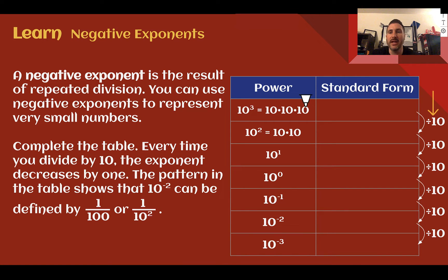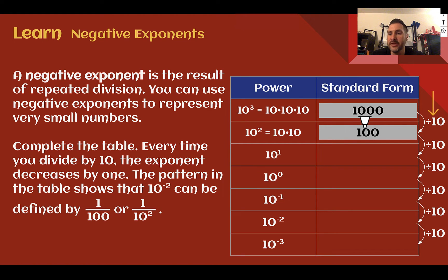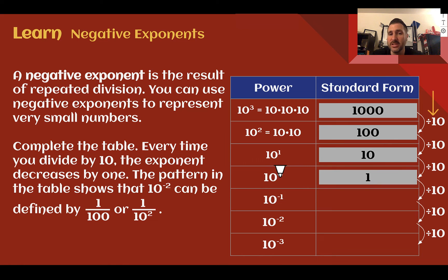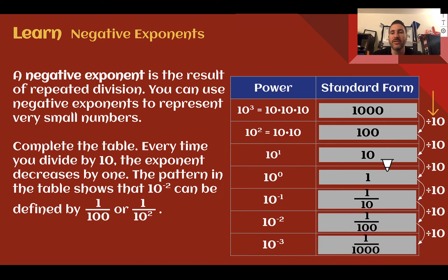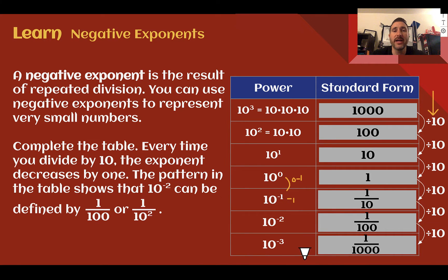10 to the 3rd is 10 times 10 times 10, which is 1000. Divide by 10, we get 100, which is 10 squared. Divide by 10 again, we get 10 to the 1st. Divide by 10 again, we get 1, so 10 to the 0. Here's where we go into negative exponents. Divide by 10 again, we get 1 tenth, then 1 one-hundredth, then 1 one-thousandth. Each time we divide by 10, because we're dividing by the same base, we subtract from the exponent — so 0 minus 1 is negative 1, then negative 2, and so on. That's how we get negative exponents: dividing by the same base more times than we had originally.